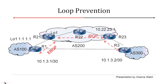R1 advertises the prefix with an AS path containing only AS100. R21 then advertises it to R22 and R23 via IBGP sessions. R23 advertises it to R3 via EBGP, so the rule says anything coming from an IBGP session or learned from another AS is advertised to EBGP neighbors. When advertised to AS300, the AS path will look like AS100 then AS200.